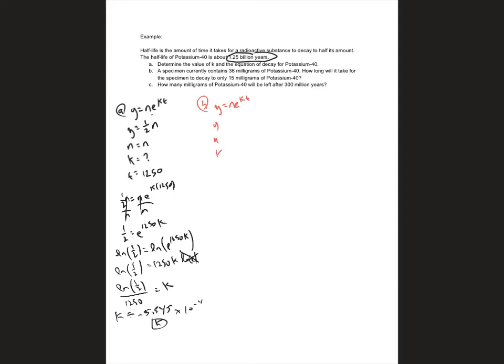I'm going to write y, n, k, and t. And remember, e is the number e. The k is the k I just calculated. And this time I'm giving it an initial amount. It's 36 milligrams.